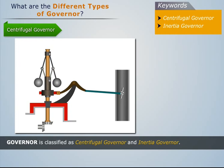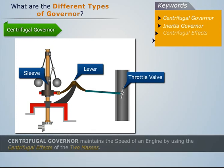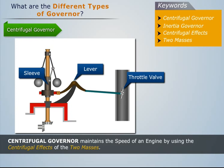The sleeve is connected to the throttle valve through a lever. This keeps the throttle valve within a specific range, thus maintaining the speed of the engine. We can say that the centrifugal governor maintains the speed of an engine by using the centrifugal effects of the two masses.